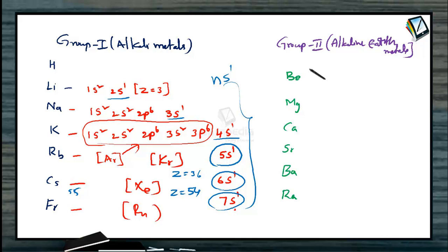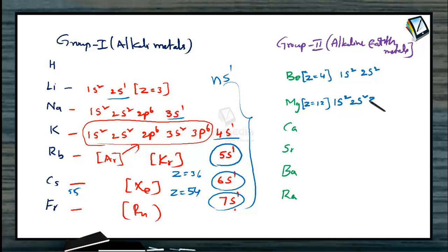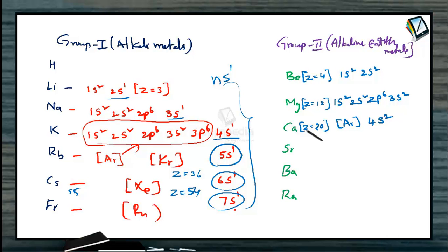The electronic configuration of beryllium (atomic number 4) is 1s2, 2s2. For magnesium (atomic number 12): 1s2, 2s2, 2p6, 3s2. For calcium (atomic number 20), using the inert gas configuration of argon, the valence orbital configuration is [Ar] 4s2, meaning the 4s orbital holds the valence electrons.